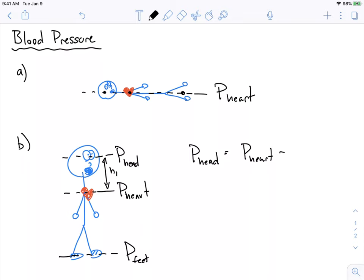It's actually less—the pressure in my head is less than the pressure in my heart. This is why if you get up too quickly, you might feel dizzy, because your blood pressure is actually lower in your head than anywhere else in your body.